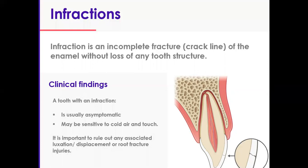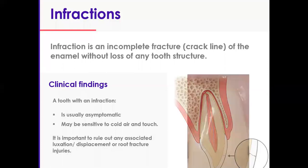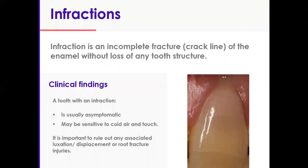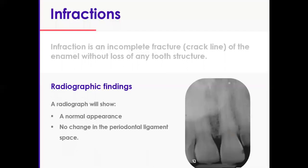As you can see in the diagram, an infraction is just into enamel, not dentin. Looking at the close-up photograph, you can see that cracks can be horizontal, vertical, or oblique — and you may get quite a few of them, not necessarily just one. If you haven't lost any tooth tissue, that's an infraction. Radiographic examination should be unremarkable: normal root appearance, no PDL enlargement, no visible socket outline changes, and no fracture line in the root.